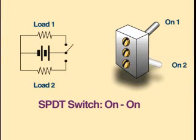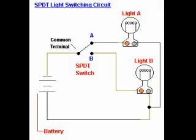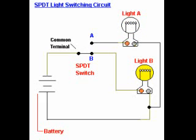This schematic diagram shows how a single pole double throw switch might be connected to control two different loads. When the lever is in position one, load one will have current flowing through it. When the lever is in position two, load two will have current flowing through it. This schematic diagram shows a single pole double throw switch that controls two lights. The switch can direct current through one light or the other. Only one lamp can be lit at one time. It is not possible for lamp A and lamp B to be on at the same time.